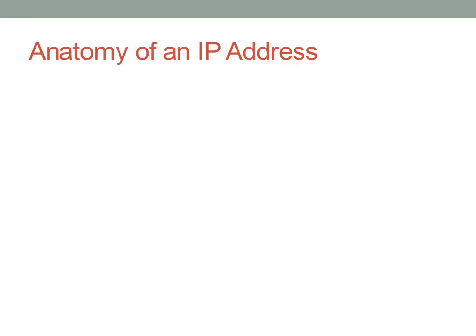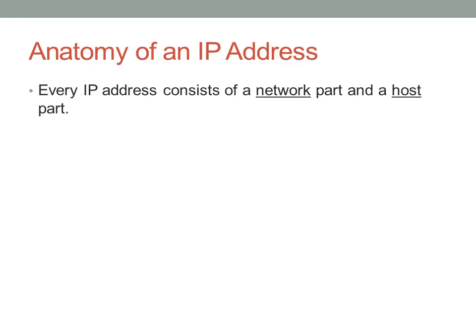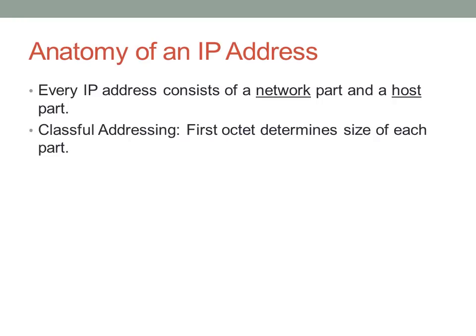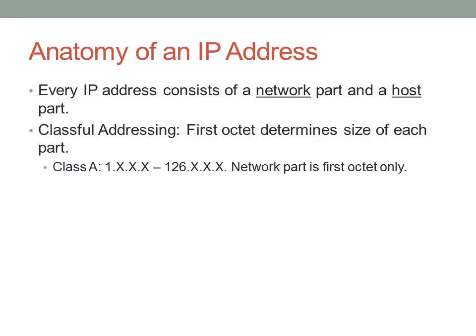Now we can break down what an IP address is. Basically, every IP address consists of a network portion and a host portion. The network portion is going to be determined by the first octet in what we call classical addressing. The first octet — the number before the dot at the very beginning of the IP address — will determine the size of the network portion and the size of the host portion. For a class A address, the number at the beginning will be between 1 and 126. The network part is only the first octet, and the other three octets will be used for the hosts.